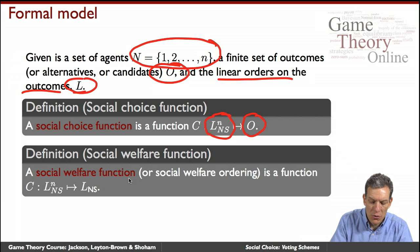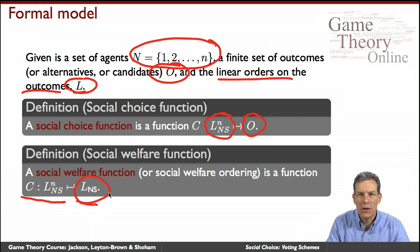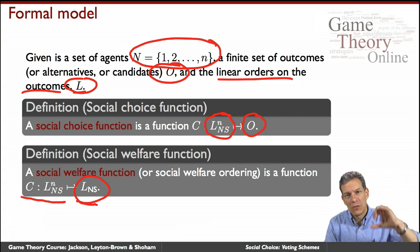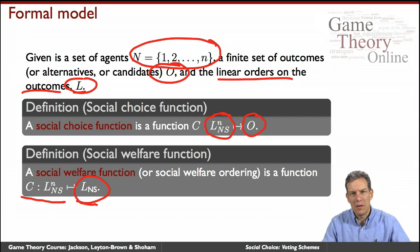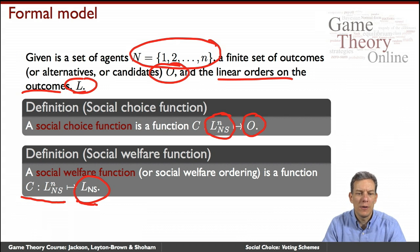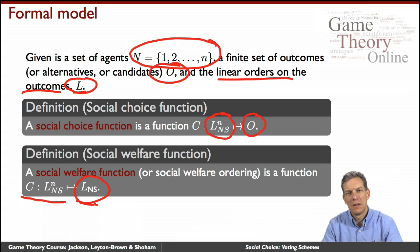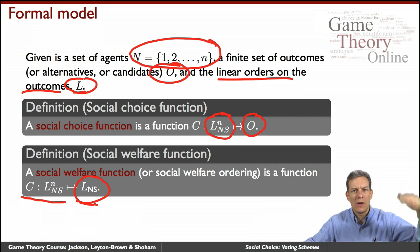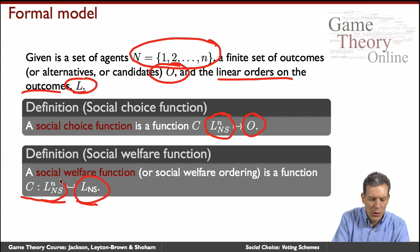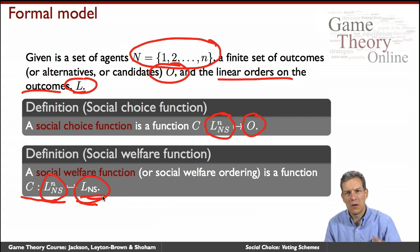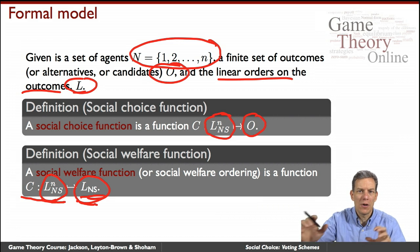A social welfare function or social welfare ordering is similar, except that instead of just picking an outcome, it gives you a full ranking of outcomes — society ranks the outcomes. So with three outcomes A, B, C, rather than just picking one as president, society might actually rank all of them. This is like rankings of universities or schools, where we aggregate individual rankings and produce an overall societal ranking, possibly with ties.